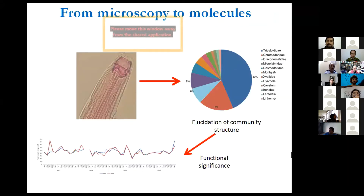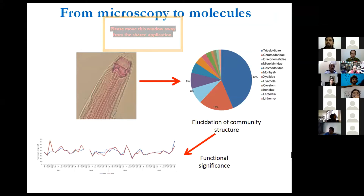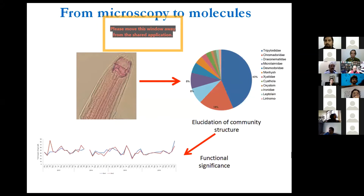The idea is that from microscopy you go to molecules. Obviously morpho-taxonomy is still the basis, but you look at the molecules that make up this complex metazoan group, and from the molecules you start to deduce or elucidate the community structure. You don't stop just at the community structure level — you look at the functional significance: why these communities are there, what they're actually doing at a given time, and why they're important in that ecosystem. The evolution has happened from microscopy to molecules, where microscopy is still the pillar and molecules are adding robustness to that pillar system.